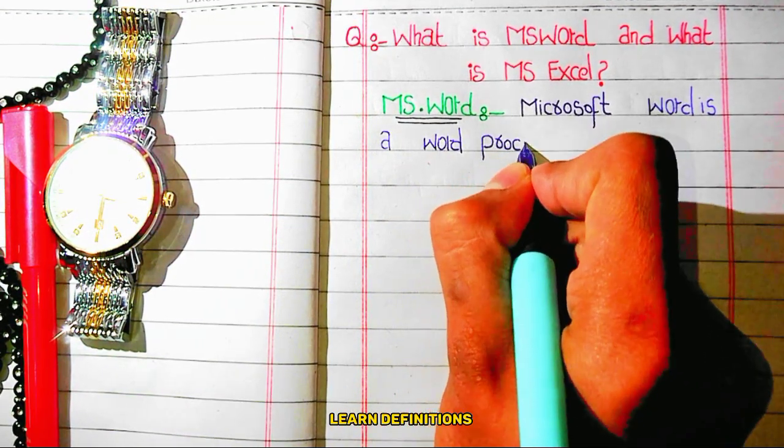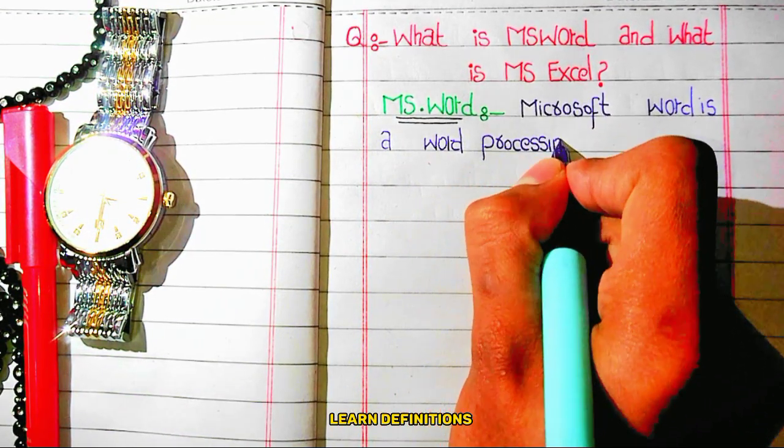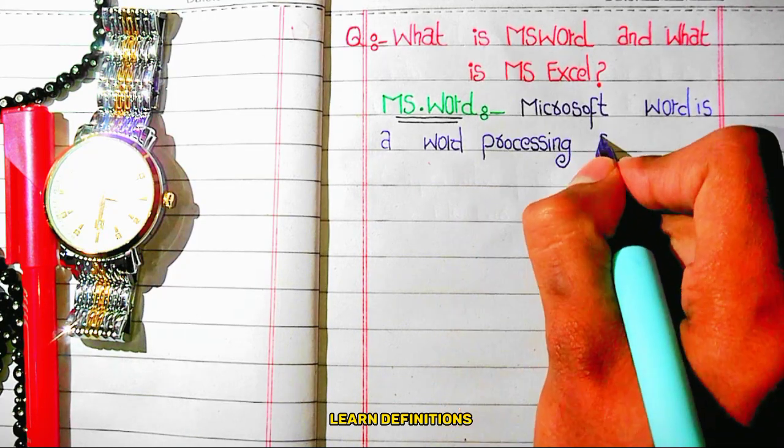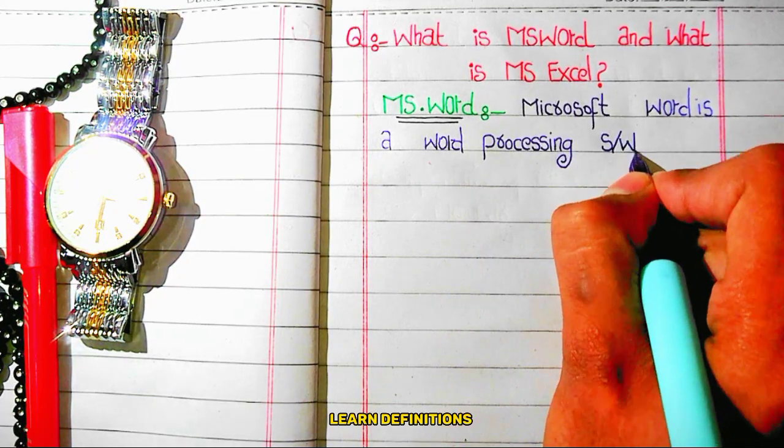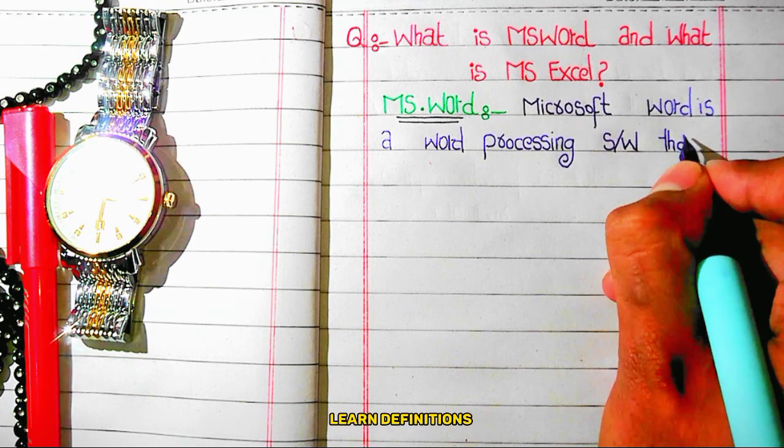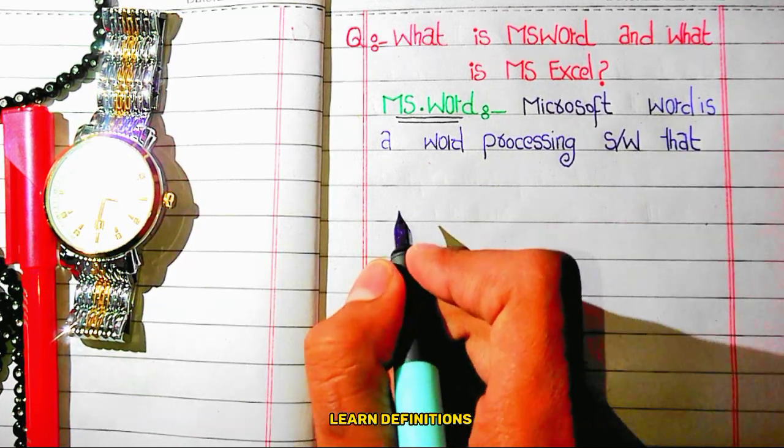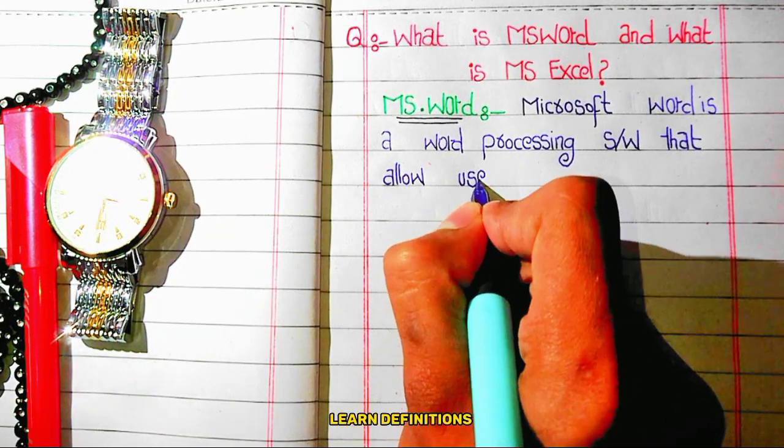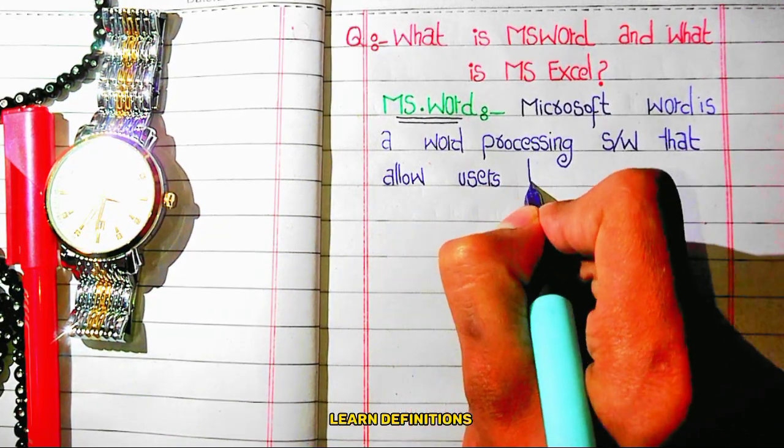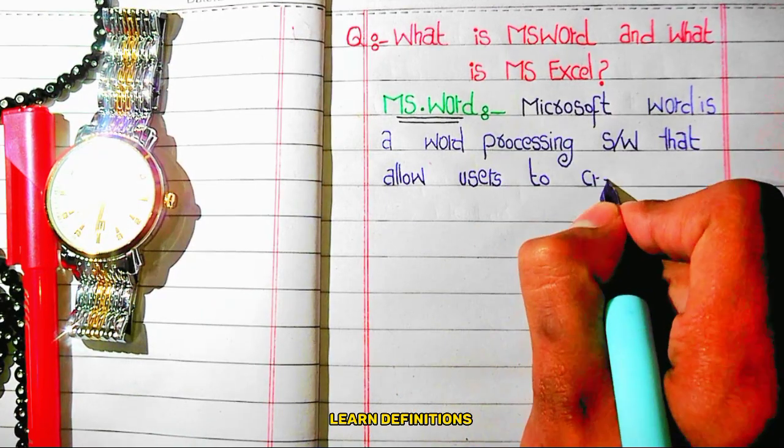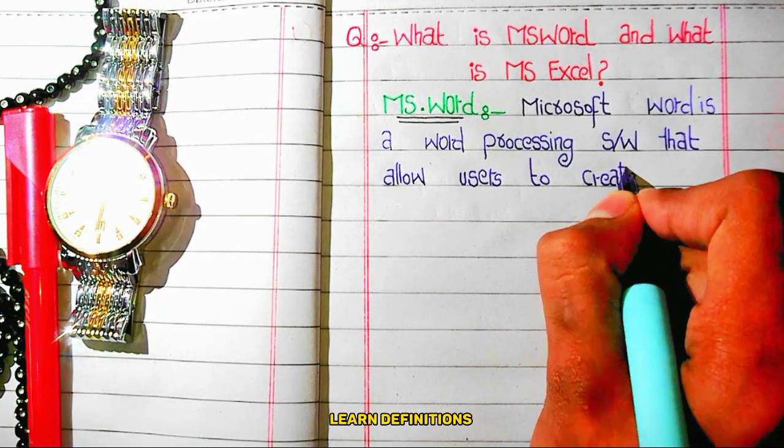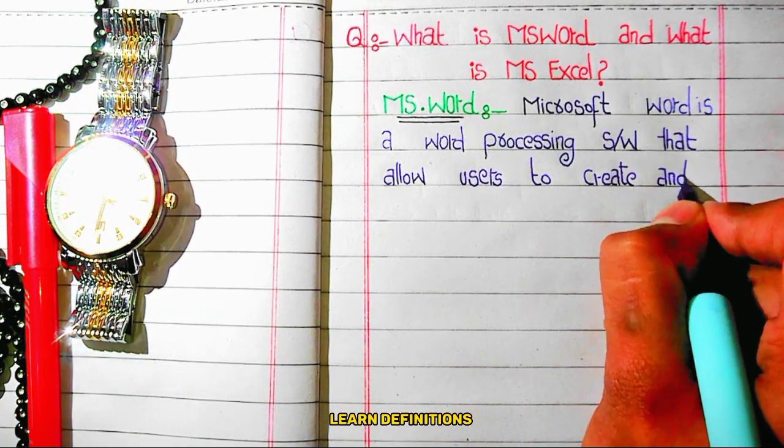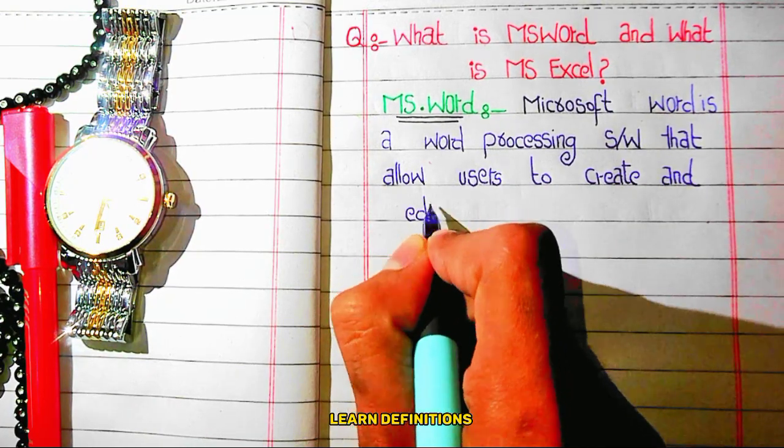First of all, we define MS Word. The definition of MS Word is Microsoft Word is a word processing software that allows users to create and edit text documents.